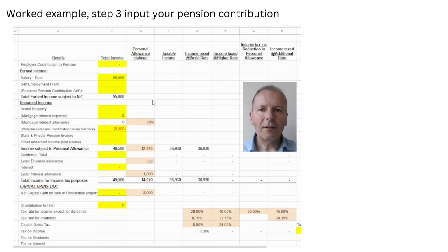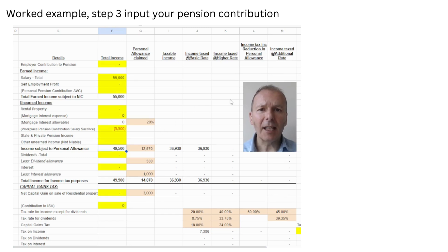If we don't want to pay the higher rate we need to do something about it. A way to lower the tax bill is to increase the pension contribution into a workplace pension. If we're already contributing 5% and increase to a total of 10%, taxable income drops to £49,500, keeping us within the basic rate only — total bill £7,386.